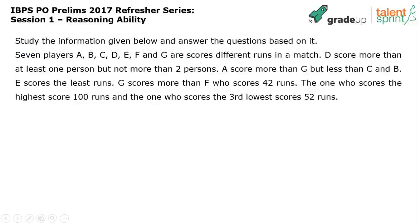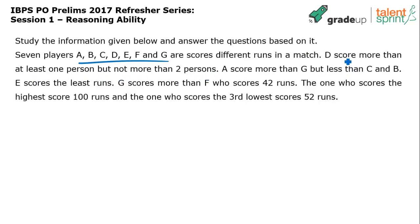Study the information given below and answer the questions based on it. Seven players A, B, C, D, E, F, and G have scored different runs in a match. D scored more than at least one person but not more than two persons. This is an important point to be understood.